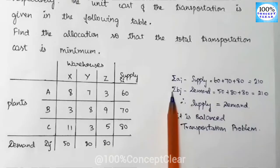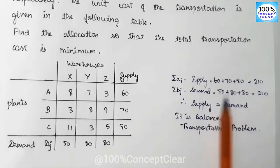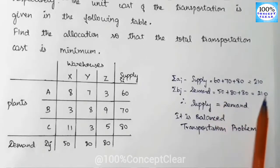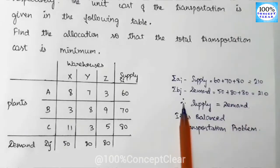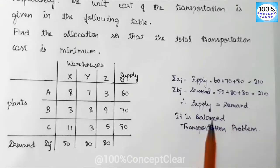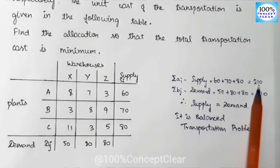Next, the summation of demand: 50 plus 80 plus 80 equals 210. Demand and supply are both equal to 210, so supply equals demand. Therefore, this is a balanced transportation problem.